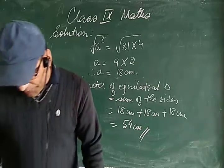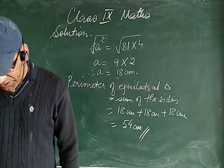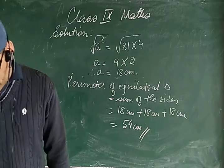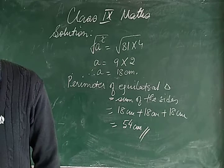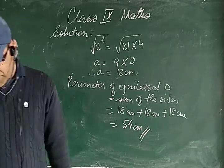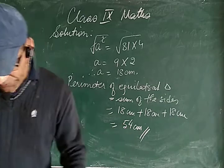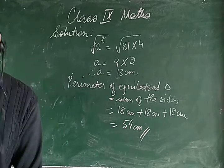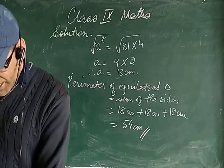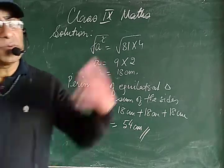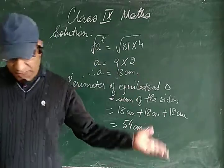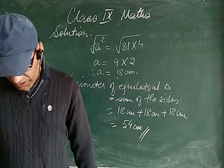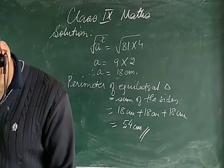Here is another type of problem: if the perimeter of a right angle triangle is 60 centimeters and the hypotenuse is 25 centimeters, find its area. Since the sum of the sides is given as 60 cm and the hypotenuse is 25 cm, we can find the other sides and then calculate the area.